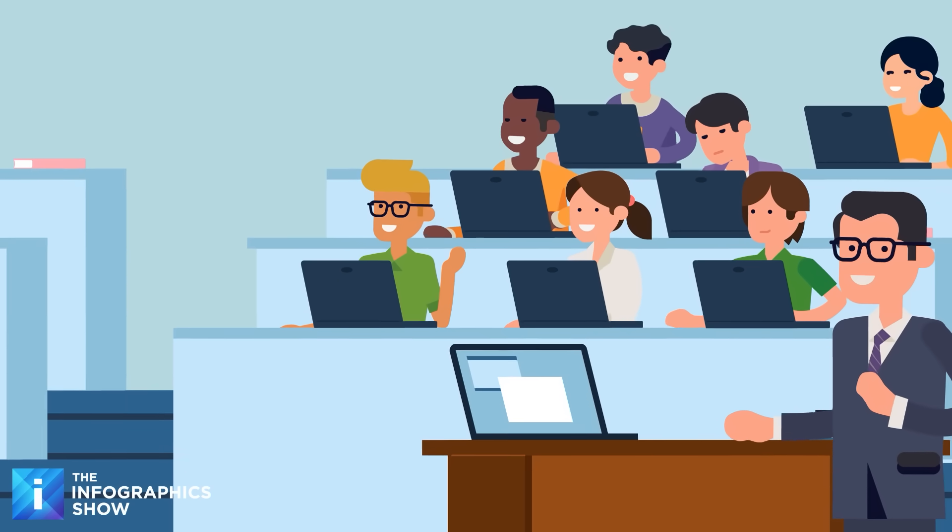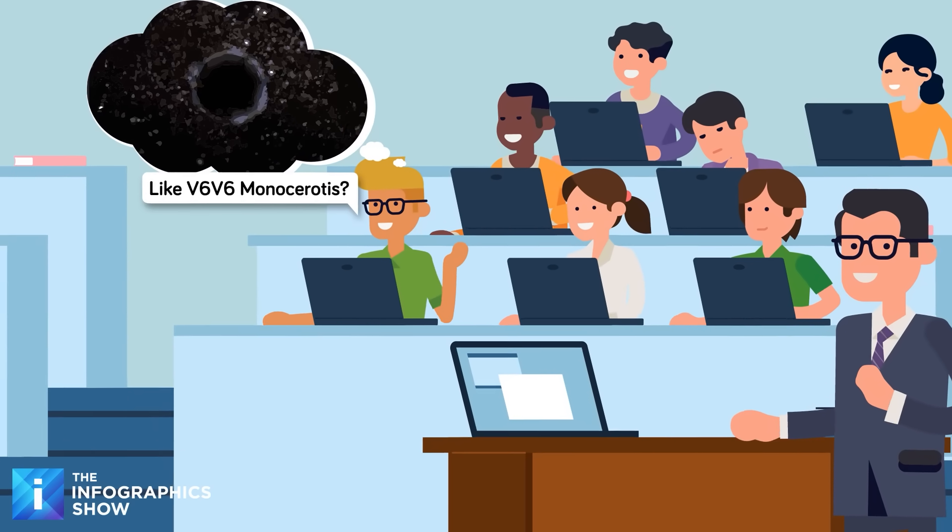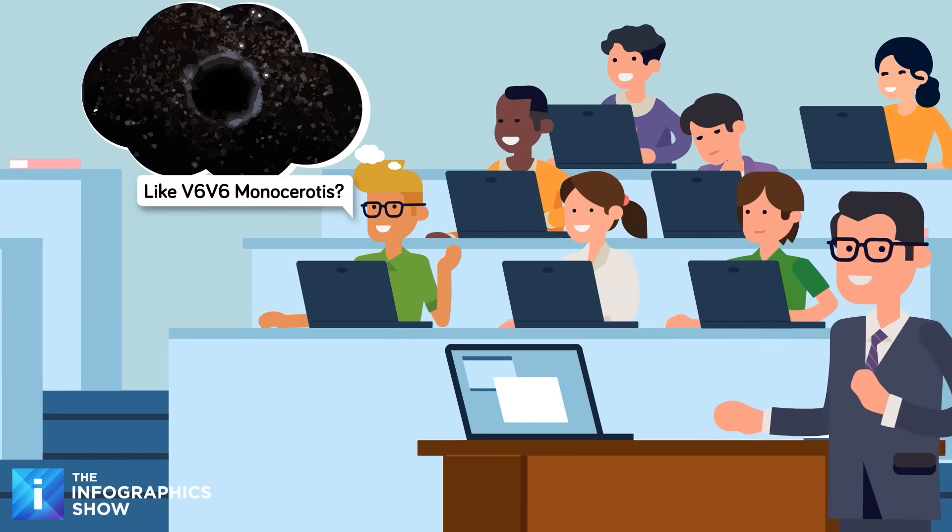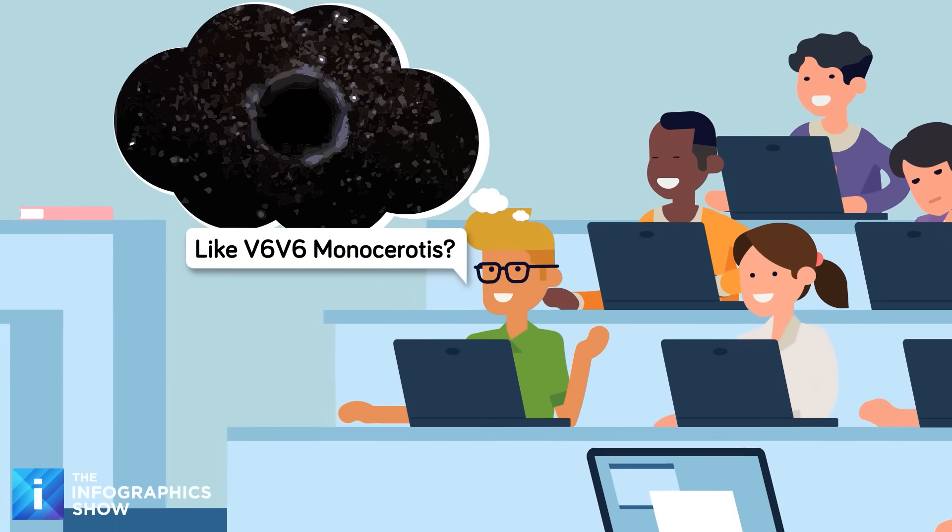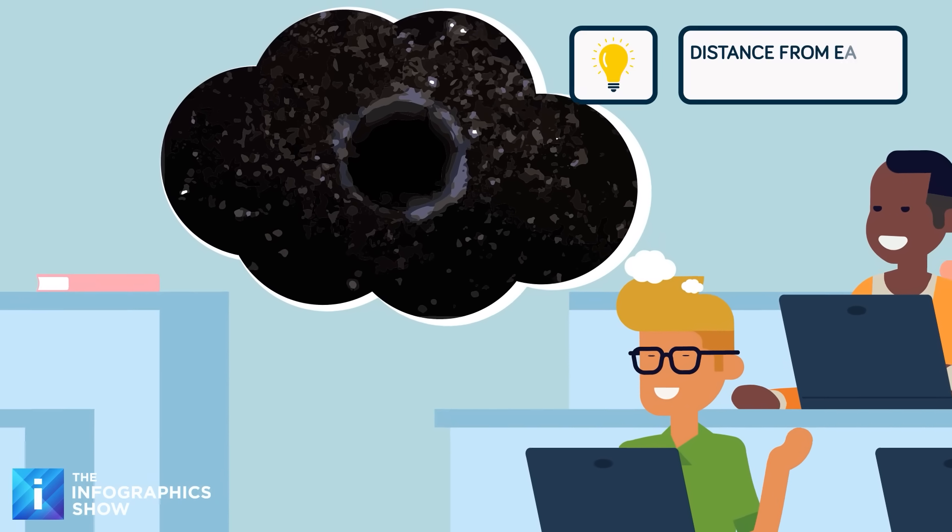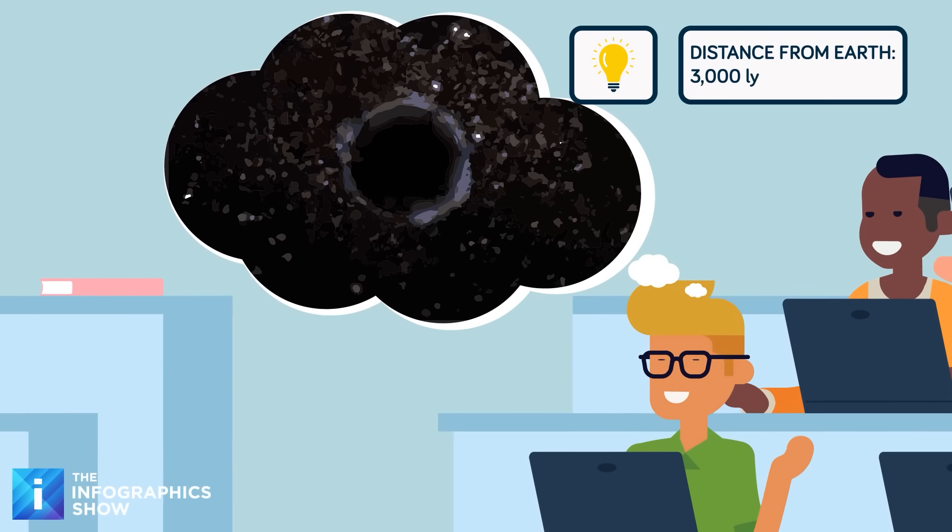The closest one we know about is called V616 Monocerotis. It sits just 3,000 light years away. In cosmic terms, that's practically next door. It's currently feeding on a companion star, slowly stripping away its partner's atmosphere and essence, in a process that will take millions of years. The victim star has no escape. It's being eaten alive in slow motion.